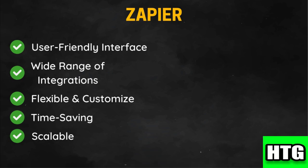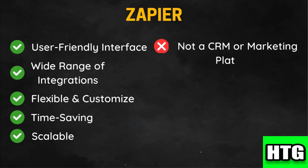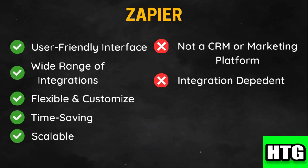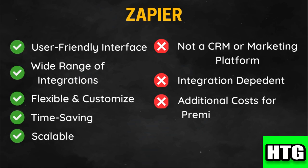While powerful for automation, Zapier does not offer CRM or marketing functionalities. Its effectiveness depends on the apps you are integrating — if an app isn't supported, automation can be limited. Some advanced features and higher usage levels also require paid plans, which can add up for heavy users.